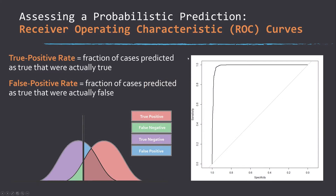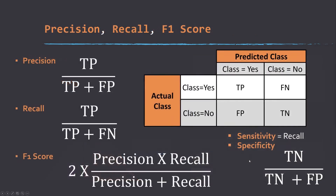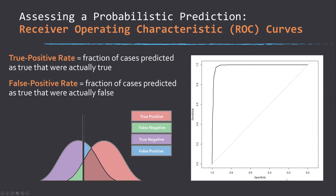The ROC curve is derived from that information. Here's an example: the y-axis is sensitivity and the x-axis is specificity. Sensitivity is your recall on the y-axis, and specificity — true negative divided by true negative plus false positive — is on the x-axis. They're scaled from 1 to 0 and 0 to 1 respectively. If you want it scaled 0 to 1, you just use 1 minus specificity.